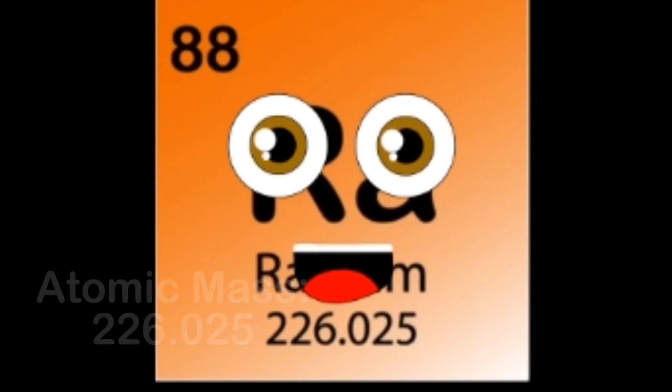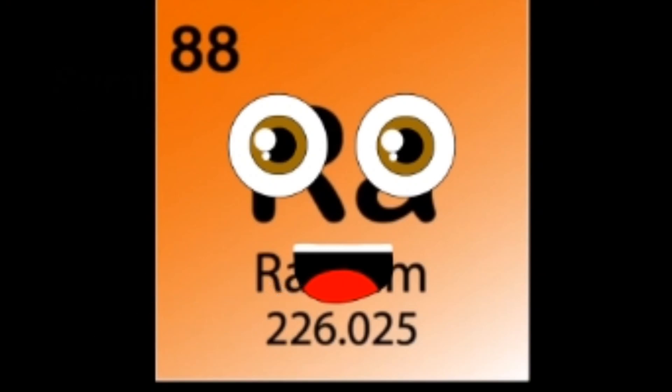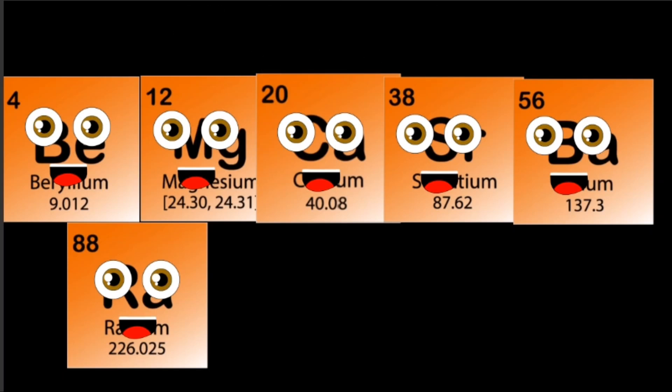My symbol is Ra on my periodic square. I am a white metal that turns black when I am exposed to air. We are the alkaline earth metals, we are in column two in the periodic table. There's six elements in our crew.